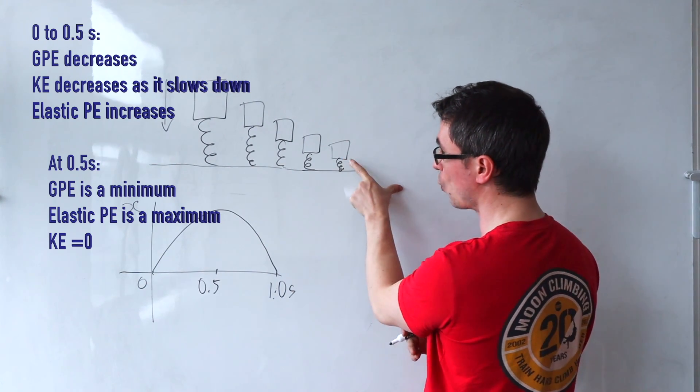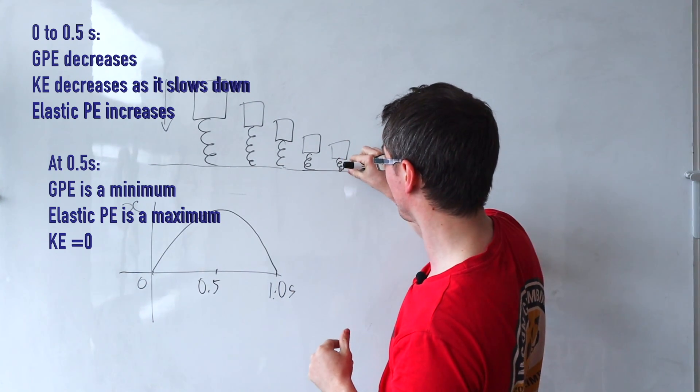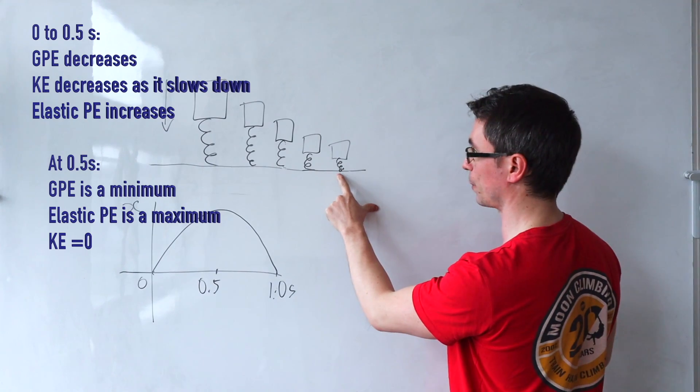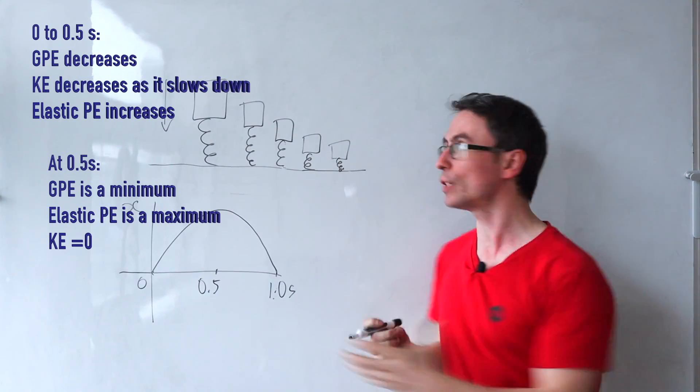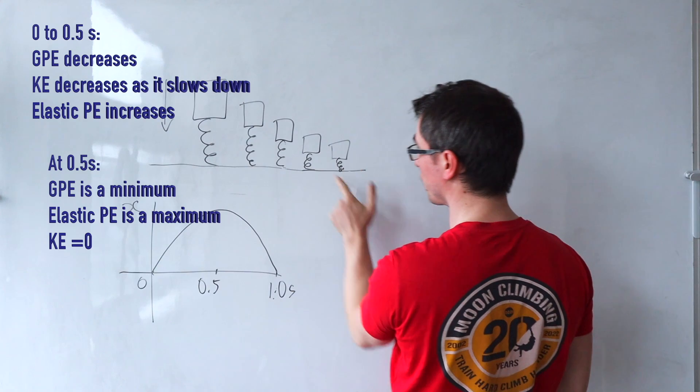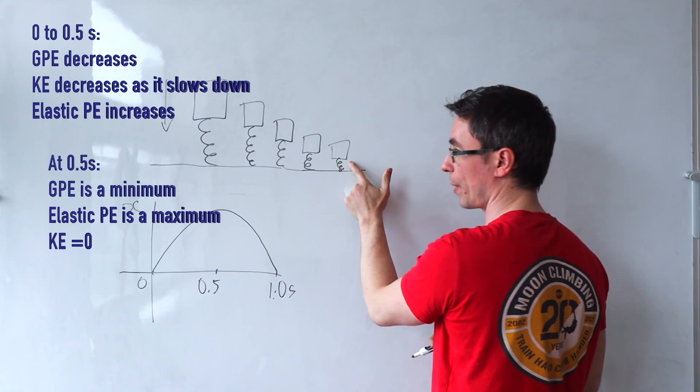The gravitational potential energy will be at a minimum because it's some distance away from the ground. The kinetic energy throughout this process would have decreased until it reaches zero at this point.